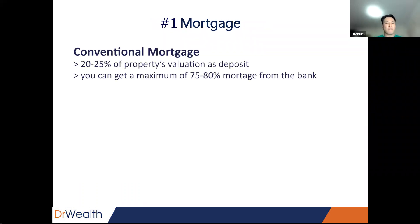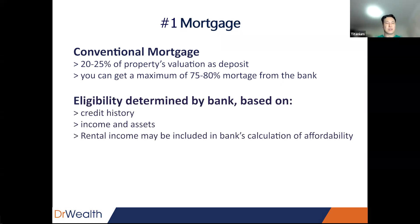Mortgage. With a conventional mortgage, you are expected to bring 20% to 25% of a property's valuation as deposit, while getting a maximum of 75% to 80% mortgage from the bank. The banks will review your credit history, income, and assets before determining if you are eligible. Rental income from a property may be included in the bank's calculation of affordability, so you should keep your job, maintain a salary, and clear your bills as fast as you can to get a very good credit score.